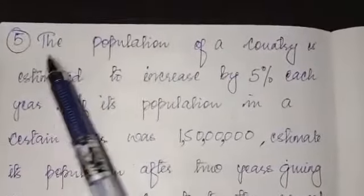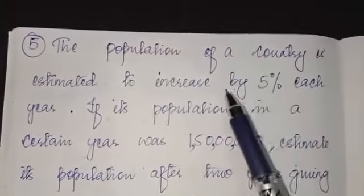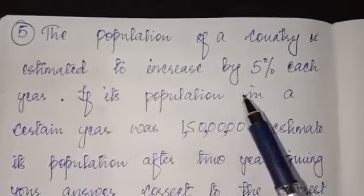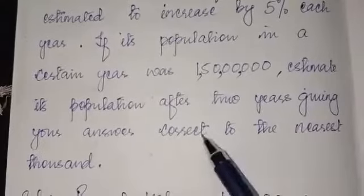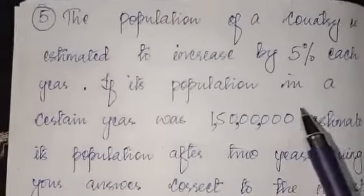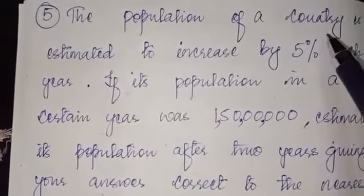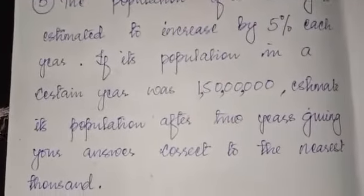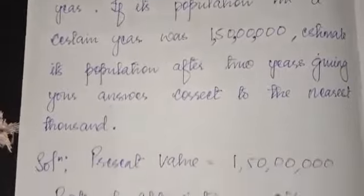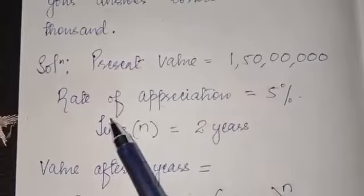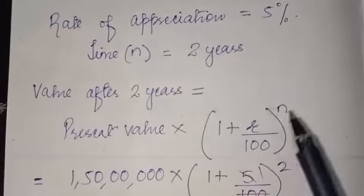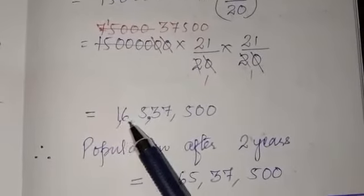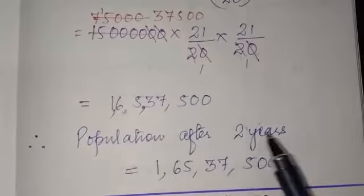Question number five: The population of a country is estimated to increase by 5 percent each year — increase means appreciation. If its population in a certain year was 1 crore 50 lakh, estimate its population after two years, giving your answer correct to the nearest thousand. Present value is 1 crore 50 lakh, rate of appreciation is 5 percent, time is two years. Value after two years is present value into 1 plus r by 100 to the power n, with r as 5. You will get 1 crore 65 lakh 37 thousand 500.